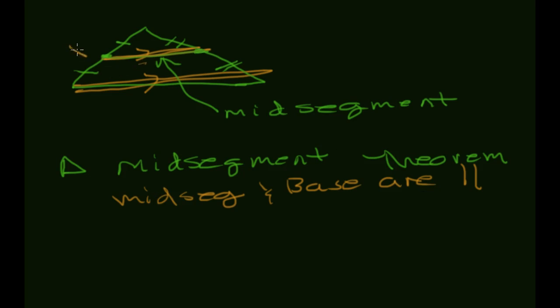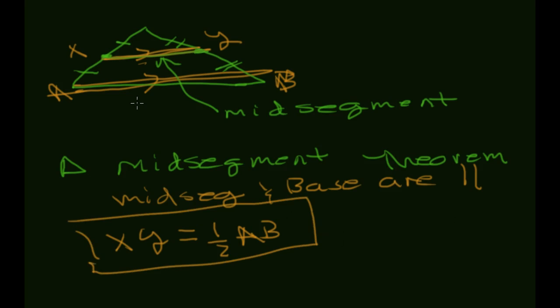The second thing is that if we call this XY and we call this AB, then XY has to be one half of AB. XY has to be one half of AB, and that's going to be something that we have to prove. But two key facts: the mid-segment is parallel to the base, and it is apparently half the length.